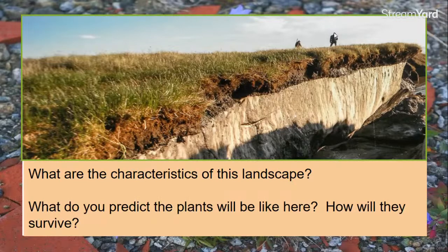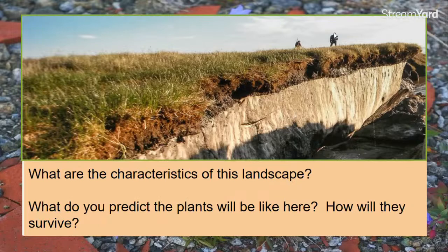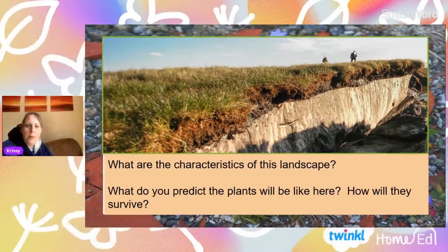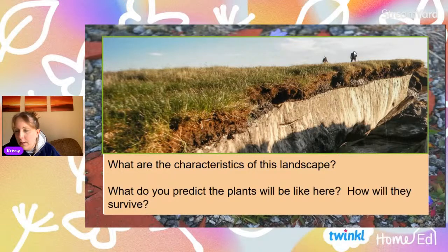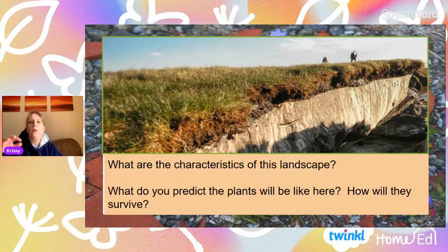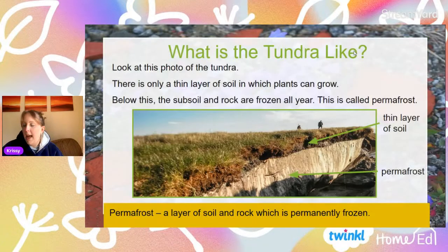So we've got quite a thin layer of soil — that's something to consider. Thinking therefore about how the plants might be: what do you think their root system might be? If the soil is potentially very thin or frozen, what do you think the root system is going to be like? And the plants aren't very big, are they? They're not particularly tall. You're not seeing big bushy things. Keep this in mind because it's really going to help us — this is a photograph of the tundra.